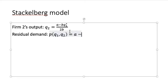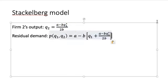It's going to be A minus B(Q1 + Q2). But we already know what Q2 is. So straightforward approach, let's just add in the function. That would be firm one's residual demand. This is the inverse demand function that firm one or the leader firm will use to obtain his profit maximizing output.